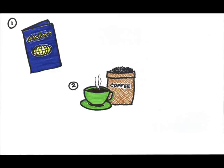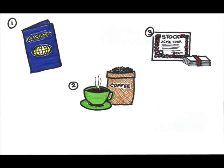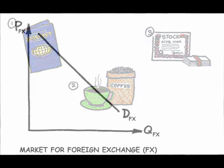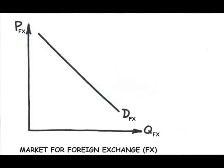Third, foreign money is needed for investment purposes, be it financial investment like purchase of foreign-denominated financial assets, or real investment like building a new factory overseas. A change in any of these three components will alter the demand for foreign exchange.